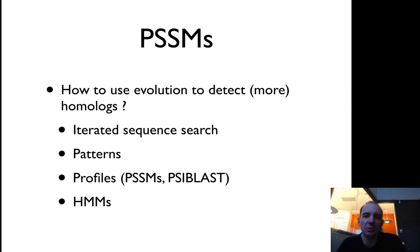Next we will talk about what's called PSSM or profiles or even hidden Markov models. This is a basic question: how can we use evolution or a multiple sequence alignment to find even more homologues, finding better database searches?